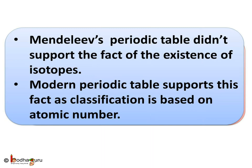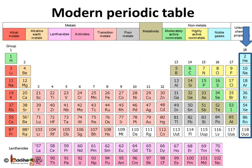And what about isotopes? Mendeleev's periodic table didn't support the fact of the existence of isotopes, whereas the modern periodic table supports this fact as classification is based on atomic number.